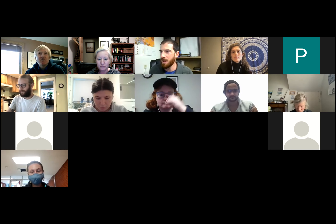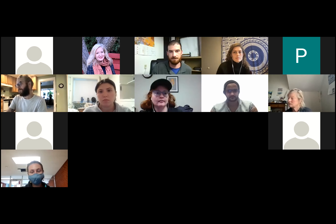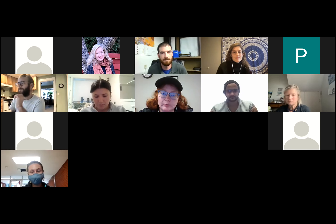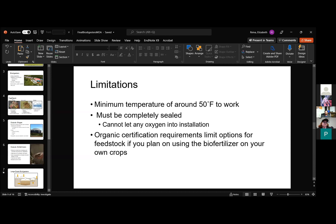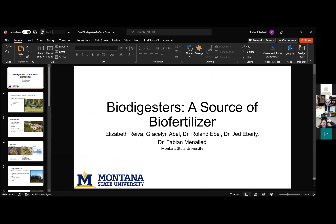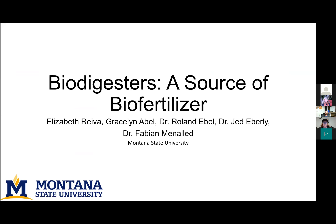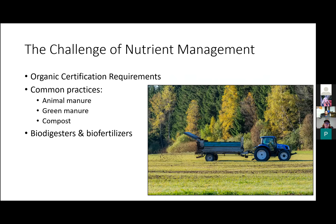Elizabeth Reva, from the Land Resources and Environmental Sciences Department at MSU, is presenting on biodigesters. One reason biodigesters are applicable to organic farming is the challenge of nutrient management. Biodigesters — particularly the bio fertilizers they produce — could be another practice alongside animal manure, green manure, and compost to help restore nutrients and maintain soil health. A biodigester is an installation that uses anaerobic digestion, containing microbes that thrive in an oxygen-free environment, to produce bio fertilizer and biogas.